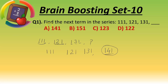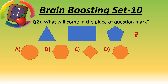Option A is the right answer: 1,4,1. Question number two: what will come in the place of the question mark? Here one triangle is given, after that one rectangle, then one pentagon. If we see the options: option A is circle, B is hexagon because it has six lines, C is rhombus, and D has seven sides.